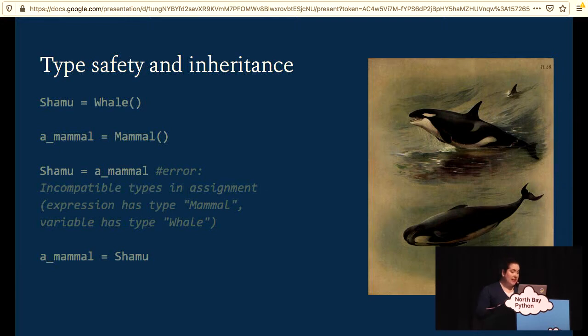Inheritance also raises issues of type safety. We can assign a variable of type whale to a variable of mammal type, since a whale is a mammal. And assigning a mammal to a whale, however, is not safe, since all mammals are not whales. Subtype relationships in Python are determined by the methods implemented on the object. And I'll discuss this kind of structural subtyping later.